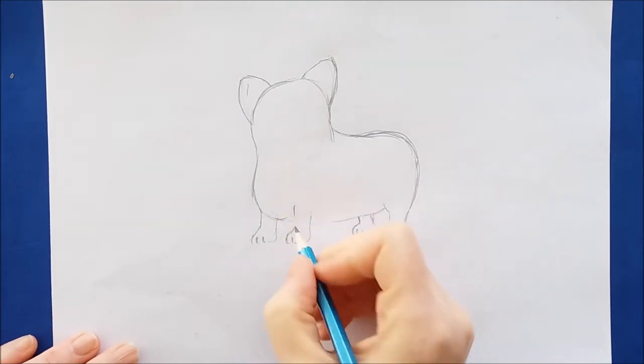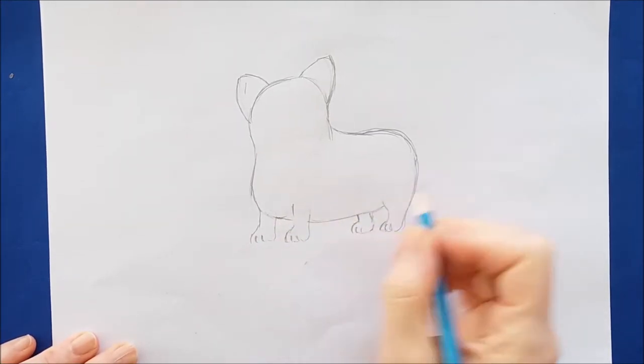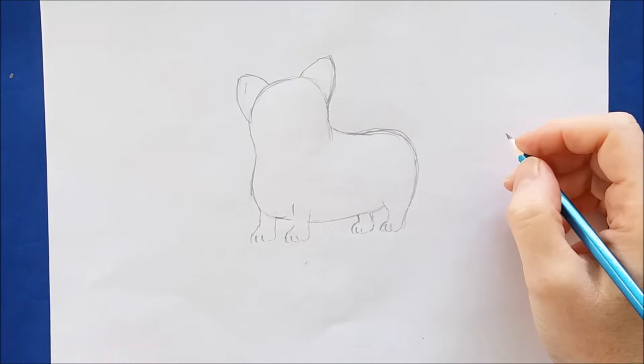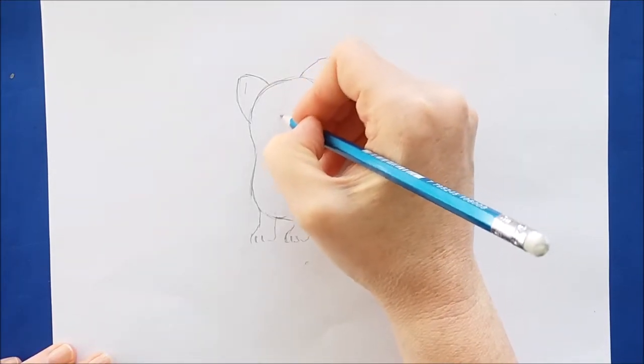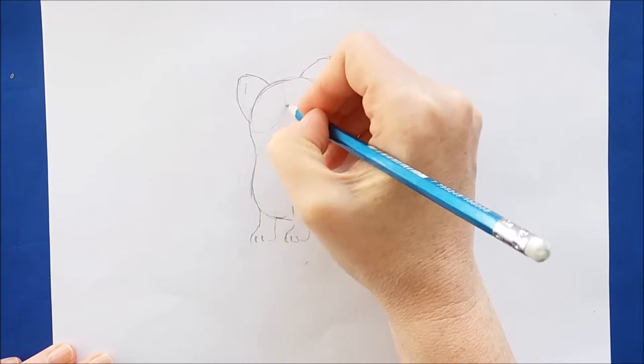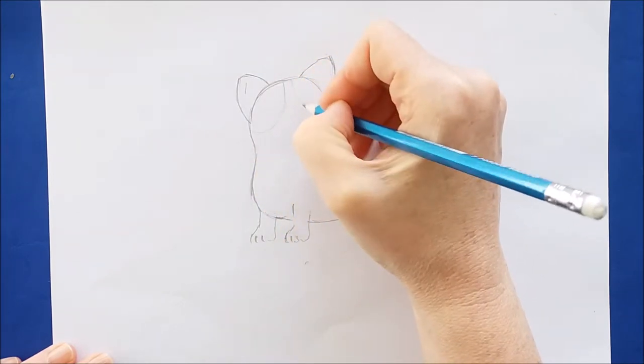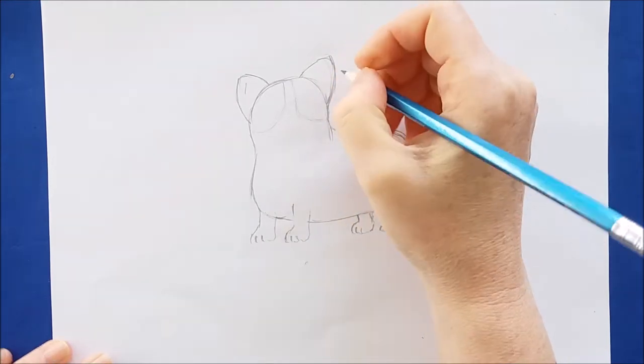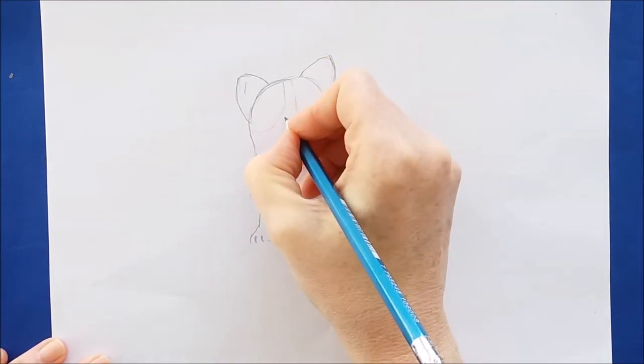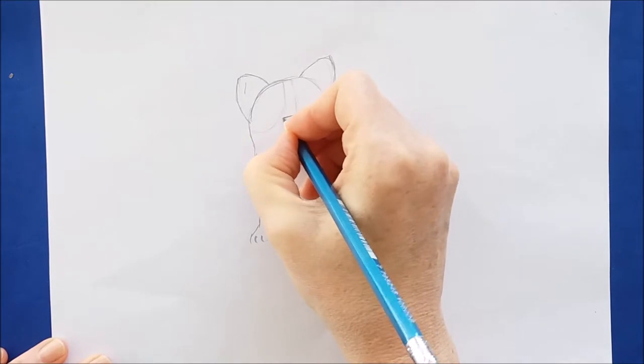And corgis have short little tails. So when we add that, you really won't see much of a tail. Up here at the forehead, I'm going to give the corgi its distinctive markings. So I'm drawing two half circles. And these will eventually be colored in brown. And then I'm drawing the nose, which is just an upside down triangle.